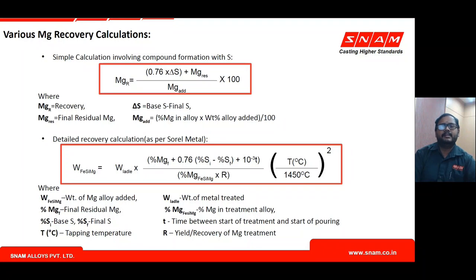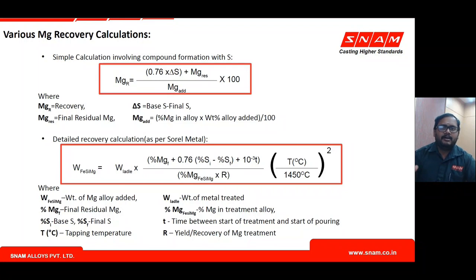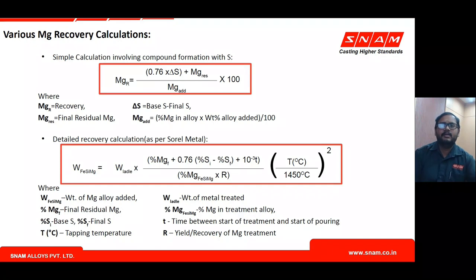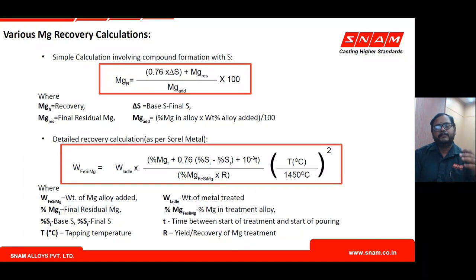To quantify residual magnesium, a recovery calculation is used. Formula one is: (final minus initial) divided by initial, multiplied by 100, with an additional factor accounting for magnesium consumed by sulfur — since magnesium desulfurizes to form magnesium sulfide. The stoichiometry accounts for magnesium consumed by sulfur plus the residual magnesium remaining, which is what the spectrometer reads.